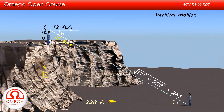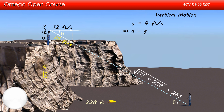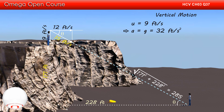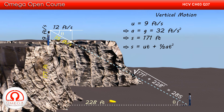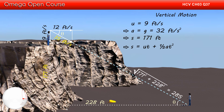Now let us look at the vertical motion of the projectile. The initial speed is 9 feet per second in the downward direction. Acceleration is acceleration due to gravity, which is 32 feet per second squared in the vertically downward direction. Displacement of the projectile is 171 feet in the downward direction. From the second equation of Newton's equations of motion, we get s = ut + ½at².